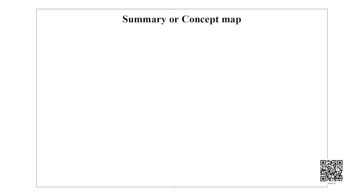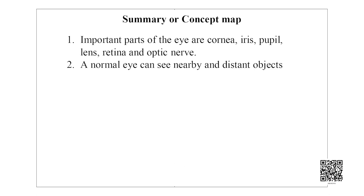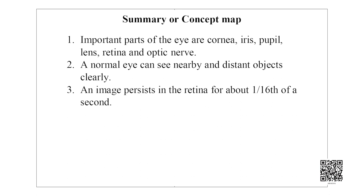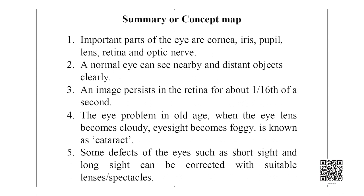Summary: The important parts of the eye are cornea, iris, pupil, lens, retina, and optic nerve. A normal eye can see nearby and distant objects clearly. An image persists in the retina for about 1/16th of a second. When the eye lens becomes cloudy in old age, it is known as cataract. Defects such as short sight and long sight can be corrected with suitable lenses or spectacles.